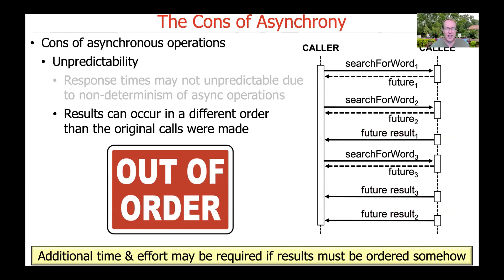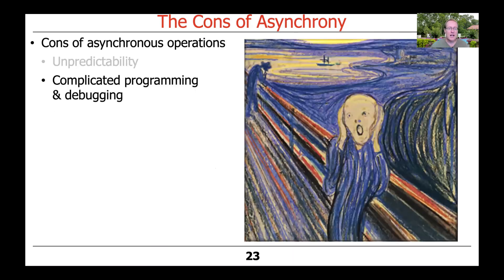Sometimes you don't care about order — it's like Java parallel streams where you say order doesn't really matter, I don't care about encounter order, and whatever order things come back in is fine. But other times you do care about order. If ordering matters, then additional time and effort may be required to sort the results somehow.